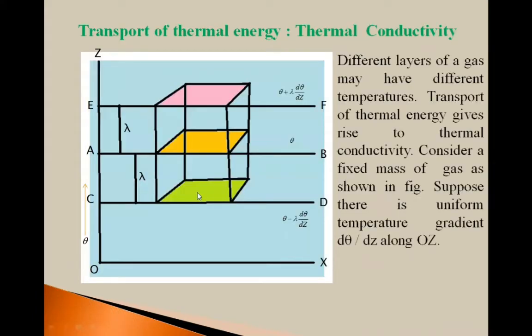Suppose a gas is at a particular temperature. Different layers of gas may have different temperatures, so transport of thermal energy takes place — heat flows from higher temperature to lower temperature layer. This transport of thermal energy gives rise to the concept of thermoconductivity.